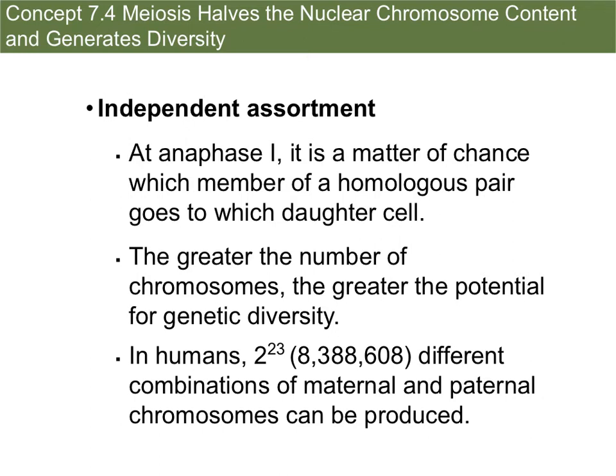Whether it's a homologous pair from your mom or your dad, there's a random chance as they line up in metaphase as to which one goes to which side. It's not like all of your mom's chromosomes line up on the left and all of your dad's on the right — they line up randomly. The greater the number of chromosomes, the greater the potential for genetic diversity, meaning the more chromosomes you have, the more combinations there can be when they're split.